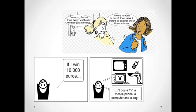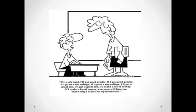If I win 10,000 euros, I'll buy a TV, a mobile phone, computer, and a dog. If I work hard, I'll get good grades. If I get good grades, I'll go to a top college. If I go to a top college, I'll get a great job. If I get a great job, I'll make a lot of money. If I make a lot of money, everyone will hate me. That's why I didn't do my homework.